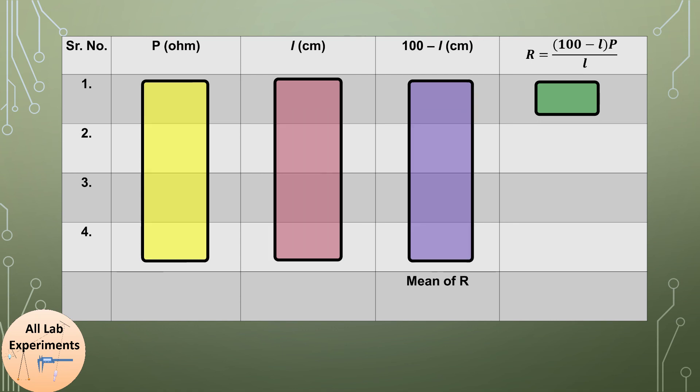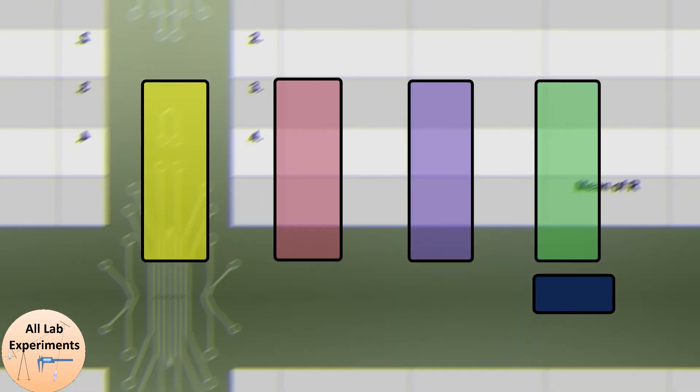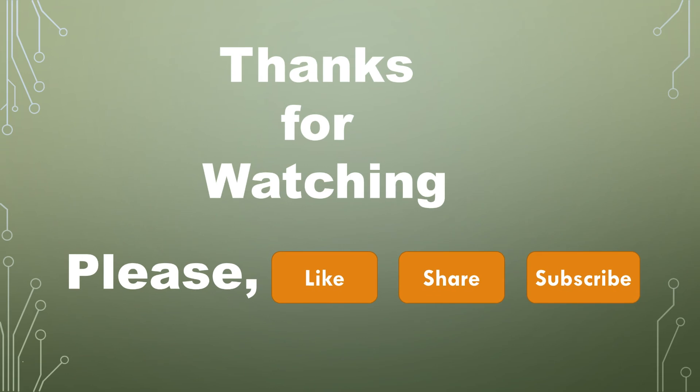So for four different values of P you will conduct the same experiment and get four values of R. To increase the accuracy of our experiment, finally we will calculate the mean of this. In this way you can find the value of an unknown resistance using meter bridge. Thanks for watching. If you like this video please don't forget to like, share and subscribe.